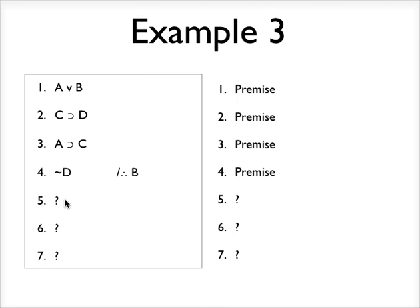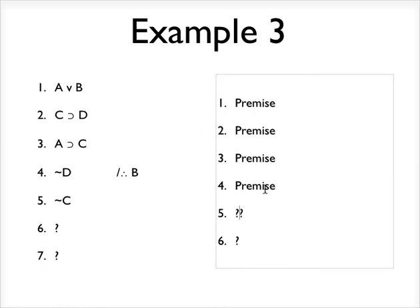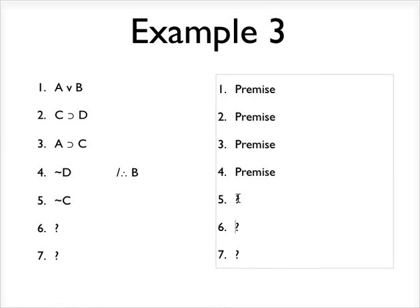And I have another premise that says not D, and you should know, if you've been practicing, what I can derive from lines 2 and 4, not C. And I have to cite the rule that I used to derive that, which is modus tollens and the lines that I've derived this new statement from, that was lines 2 and 4. So modus tollens on lines 2 and 4 allows me to derive not C.